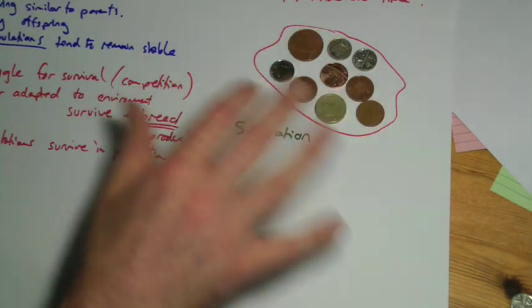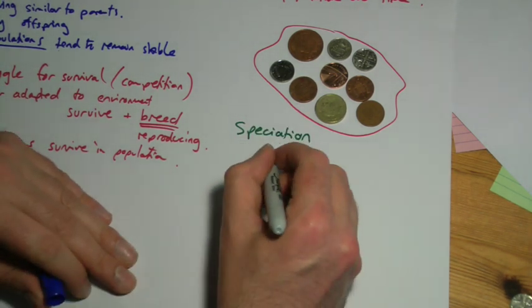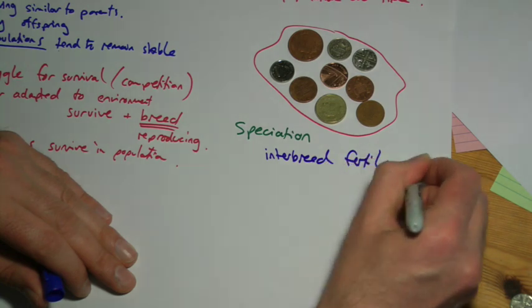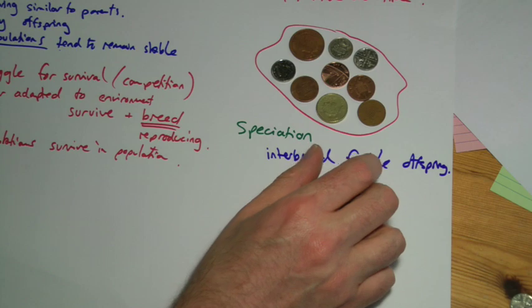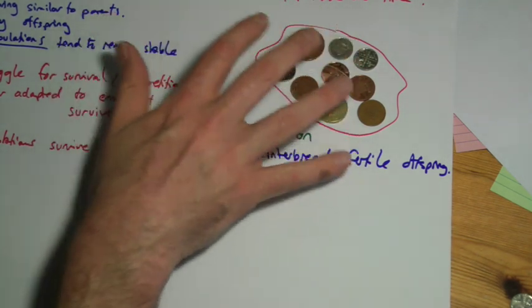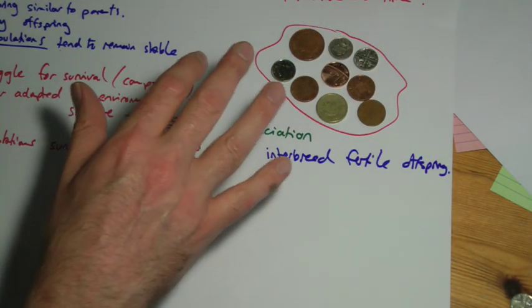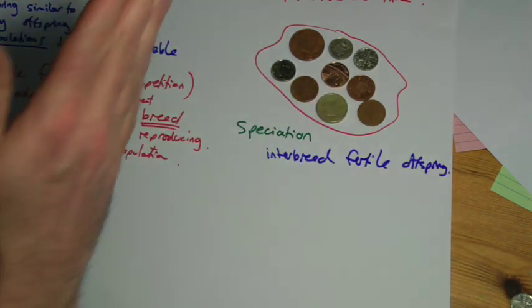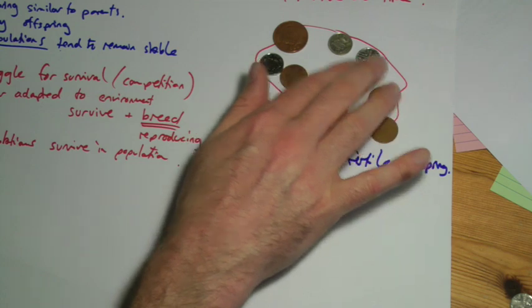What Darwin was talking about was common ancestry. But this is how the idea of speciation works. In order for things to be different species, remember this biological definition of species where it was about being able to interbreed to produce fertile offspring. So why can one cat breed with another cat but a cat can't breed with a dog? Well, the alleles they have are too different.